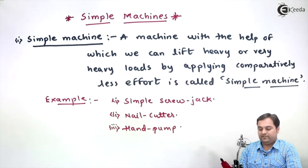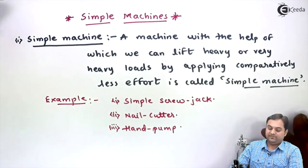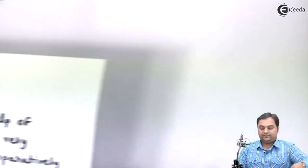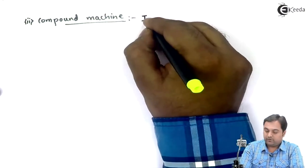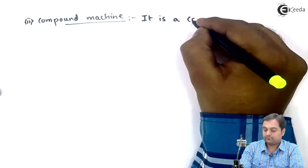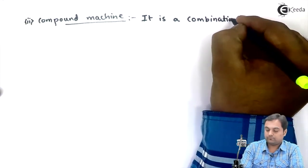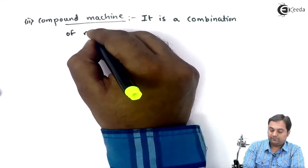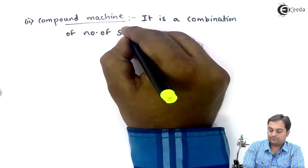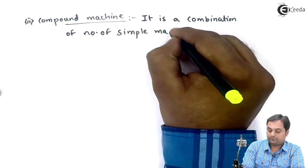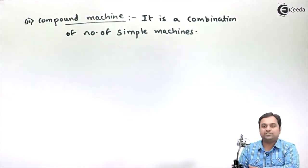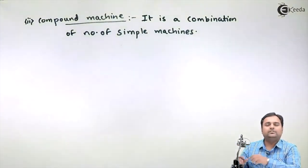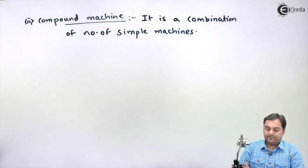Next definition is of compound machine. It is a combination of number of simple machines. So compound machine is that machine in which we are having number of simple machines combined.